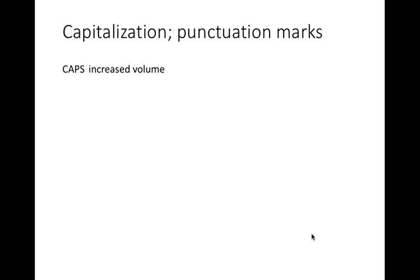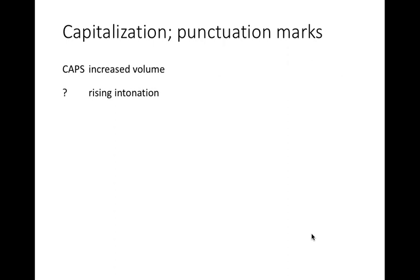Capitalization and punctuation marks are not used in the same way as they normally are in writing. We do not capitalize the initial letters in sentences. Capital letters are used to indicate increased volume — for example, 'you've DONE this to me now SEVEN times.' The question mark is used to indicate rising intonation, so pitch is going up. For example, 'I think it's five years of footage that we go through?'